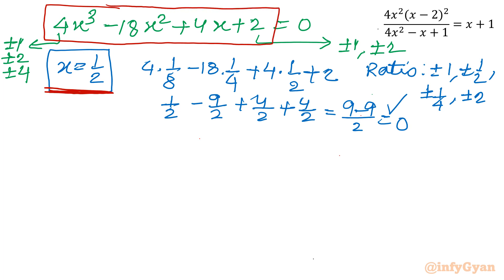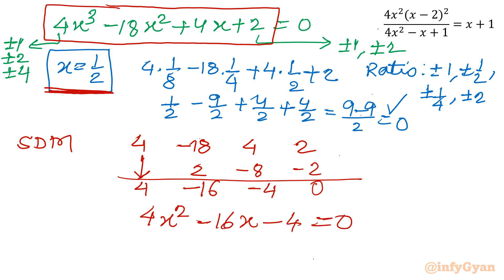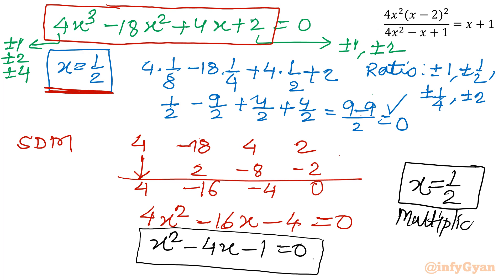Applying synthetic division again to the cubic with coefficients 4, minus 18, 4, 2 and base solution one half: 4 times one half is 2; minus 18 plus 2 is minus 16; minus 16 times one half is minus 8; 4 minus 8 is minus 4; minus 4 times one half is minus 2; 2 minus 2 is 0. The resulting quadratic has coefficients 4, minus 16, minus 4, giving 4x² minus 16x minus 4 equals 0. Dividing by 4 yields x² minus 4x minus 1 equals 0. So far we have x equals one half with multiplicity 2.